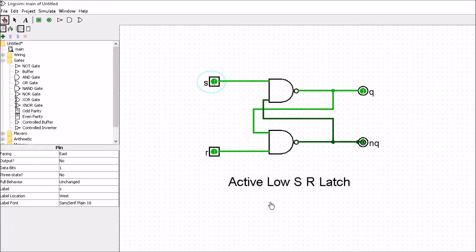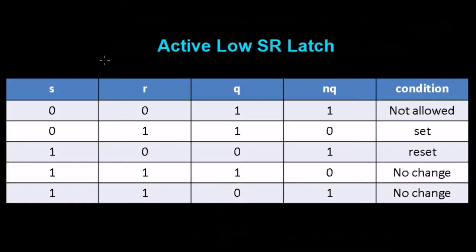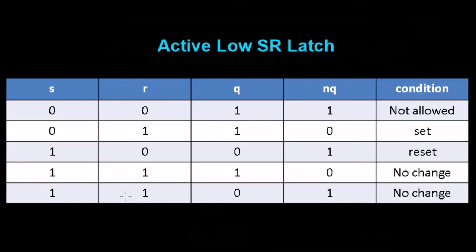Let's look at the truth table for our active low SR latch. We have inputs S and R with states 0,0 / 0,1 / 1,0 / and 1,1 - notice we've repeated 1,1 twice. We have outputs Q and NOT-Q. The condition 0,0 is not allowed because this would make Q and its complement NOT-Q equal - that's called a not-allowed condition, and we'll deal with that later. The state 1,1 appears twice because the output Q could be 1 with NOT-Q as 0, or Q could be 0 with NOT-Q as 1.